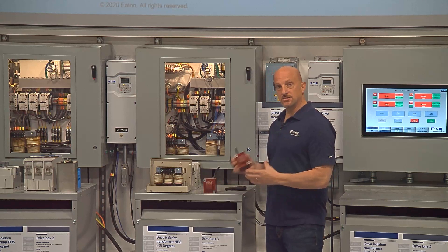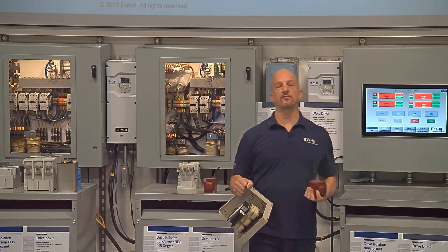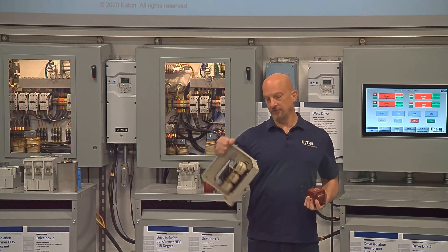So this is a DC choke, and this is an AC line reactor that you might find in front of a 30-horsepower drive. This would be in front of the drive.